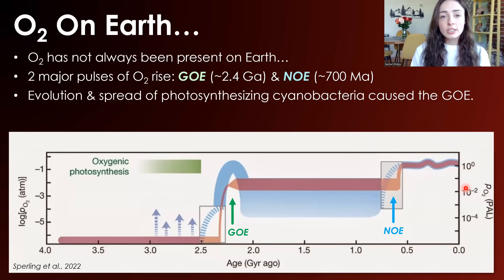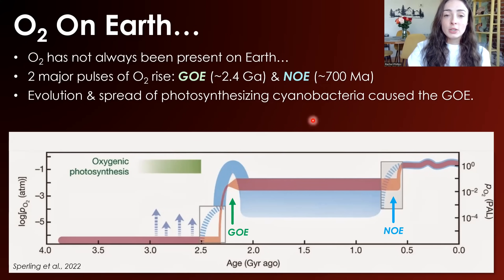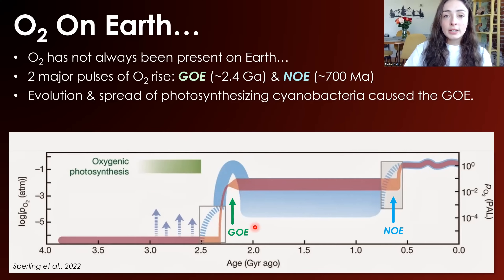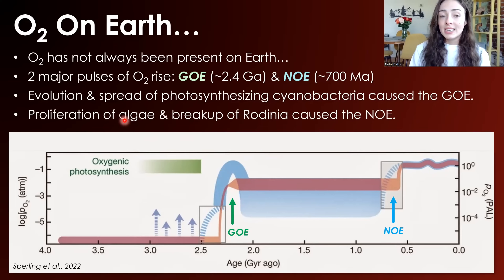The first event, the GOE, was caused by the evolution and spread of photosynthesizing bacteria. Photosynthesis produces oxygen, but that had not been around before — at least not photosynthesis that produced oxygen. But then it evolved, and cyanobacteria spread globally enough that eventually we had that big spike in oxygen concentrations we call the GOE. The NOE was caused again by another proliferation of photosynthesizing organisms — namely the evolution and spread of eukaryotic photosynthesizing organisms that we call algae.